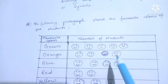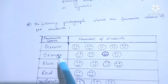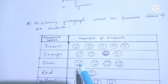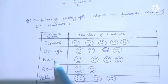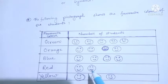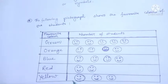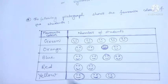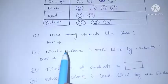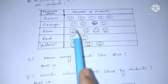One, two, three, four — four students like orange. One, two, three, four — four students like blue. One, two — two students like red, and three students like yellow. Now some questions are based on this pictograph.